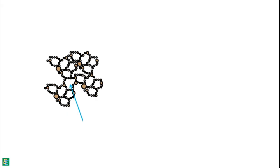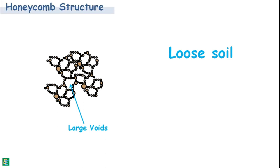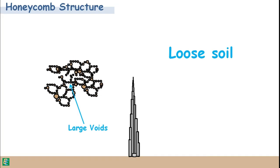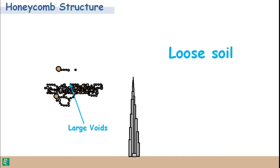Sometimes, smaller soil particles of silt size, when depositing, join with one another and form a bridge-like structure. They contain very large voids between these bridges, making the soil very loose in nature. Such a formed structure is called honeycomb structure. As soil in honeycomb structure is loose, it can support load only under static conditions. When subjected to vibration or shock, the structure collapses, large deformations take place, and the soil achieves a relatively denser state.